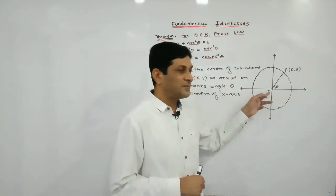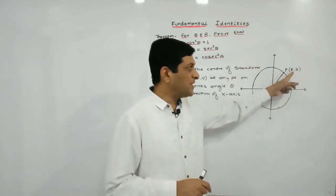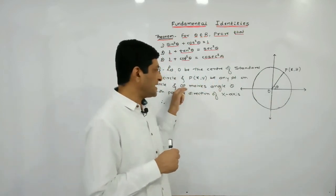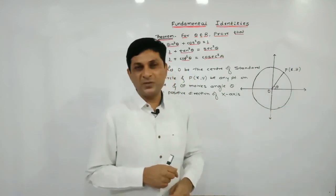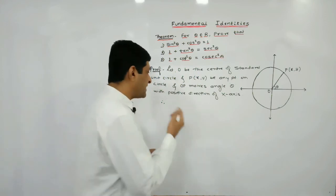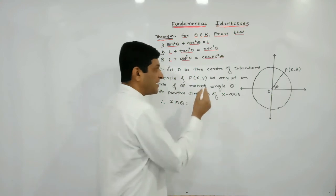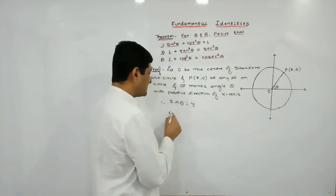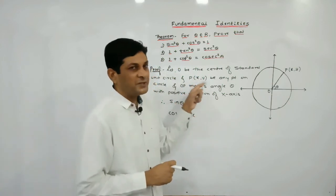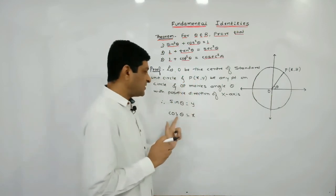Here we have considered one standard unit circle with center O. Since it is a standard unit circle, its radius equals 1. We have taken a point P having coordinates (x, y) on this standard unit circle, and OP makes angle theta with the positive direction of the x-axis. We have seen that sine theta means the y-coordinate and cos theta means the x-coordinate.